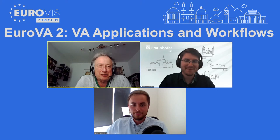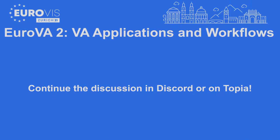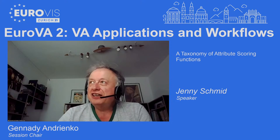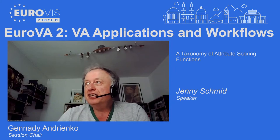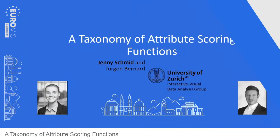The chair thanks the presenters and moves to paper number three: A Taxonomy of Attribute Scoring Functions by Jenny Schmidt and Juergen Bernard from University of Zurich.